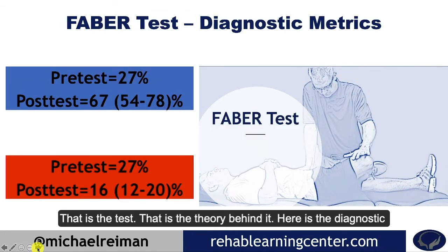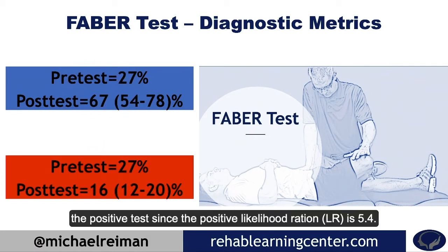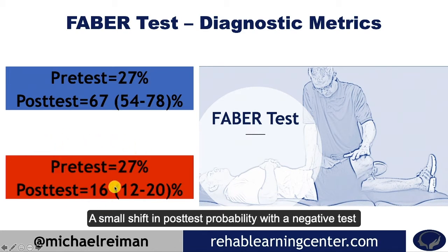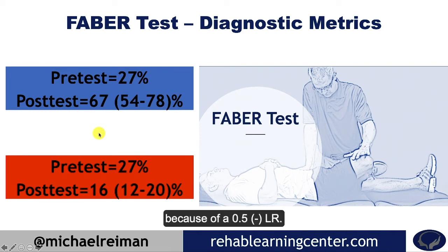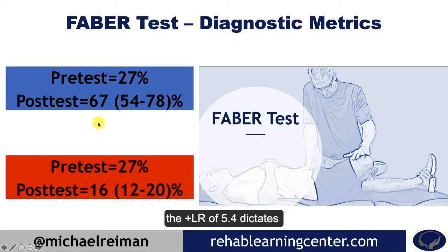That's the test and the theory behind it. Here are the diagnostic metrics: it is a moderate shift in post-test probability with a positive test because the positive likelihood ratio is 5.4. There is a small shift in post-test probability with a negative test because of a 0.5 negative likelihood ratio. Despite the 40% improvement in post-test probability, the positive likelihood ratio of 5.4 dictates the magnitude of shift.